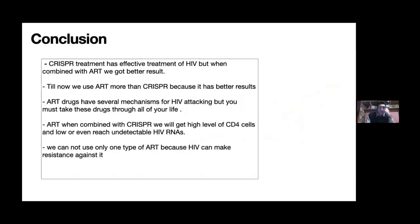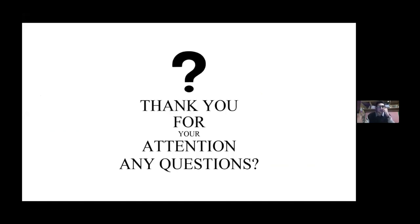In conclusion, CRISPR has effective treatment potential for HIV, but when combined with ART, we get better results. Currently, ART is used more than CRISPR because CRISPR is not yet approved for use in humans, though a Chinese doctor did use it in an embryo. ART drugs have several mechanisms targeting HIV, but patients must take these drugs for life. When ART is combined with CRISPR, we achieve high CD4 levels and low HIV RNA in plasma. We cannot use only one type of ART because HIV may become resistant to it. Thank you for your attention and any questions.